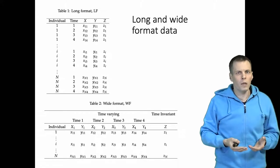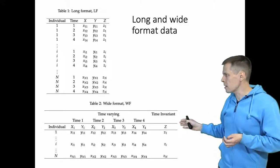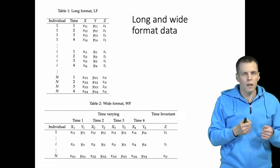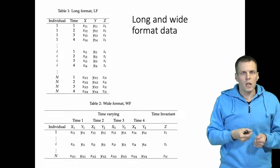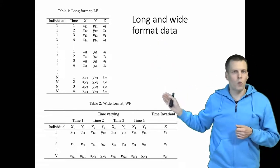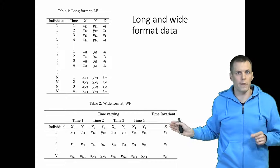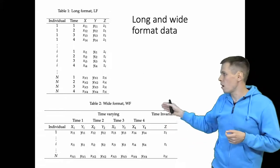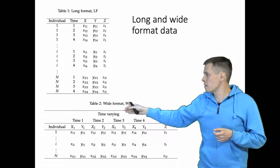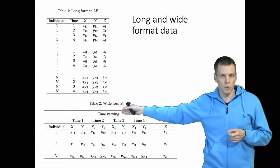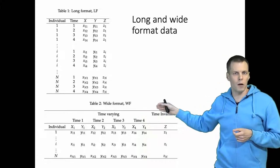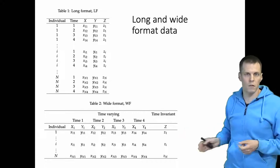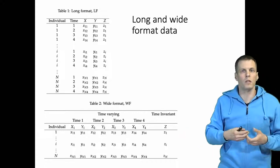In the wide format data, we have the exact same numbers — the data content is the same, it's just presented in a different format. Instead of having four observations for each individual, we have just one observation per individual, and the repeated measures of X and Y are stored as different variables. We have time one, time two, time three, and time four variables, and one variable for Z because Z does not vary over time — it is constant within individual.